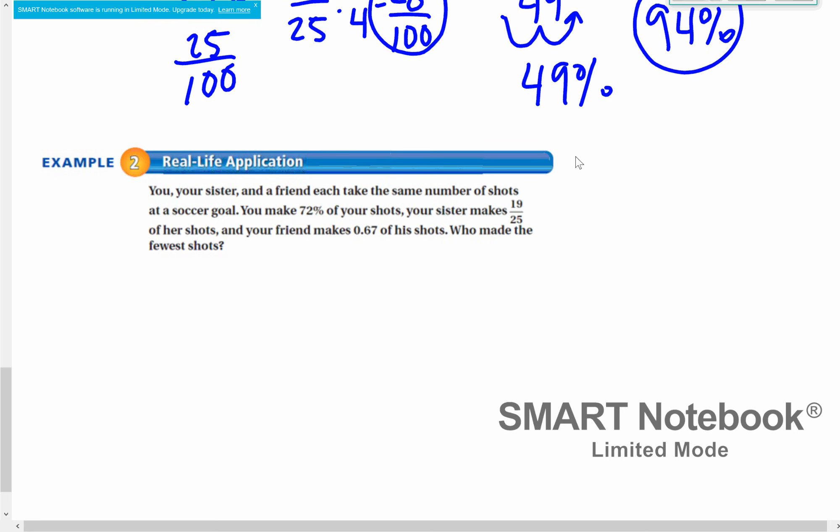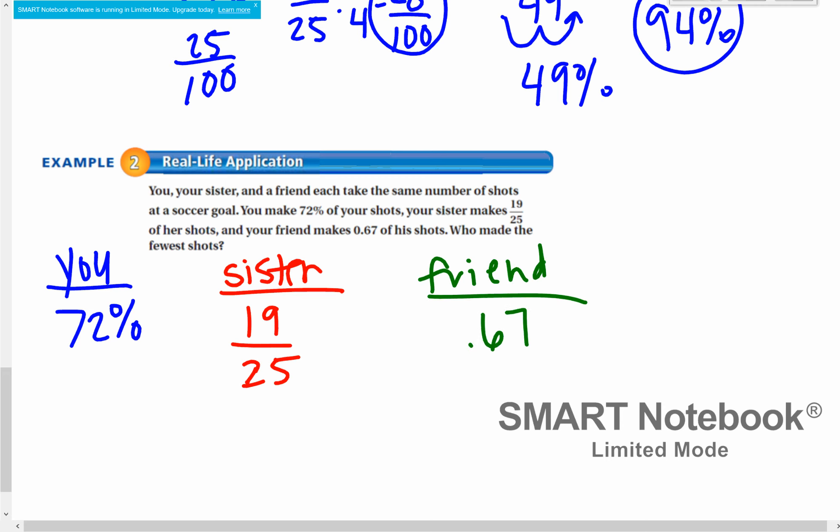Last example. You, your sister, and your friend take the same number of shots at a soccer goal. You make 72% of your shots. Your sister makes 19 twenty-fifths of her shots. And your friend makes 0.67 hundredths of their shots. They want to know who made the fewest shots. We have to make these all into something that we can compare.